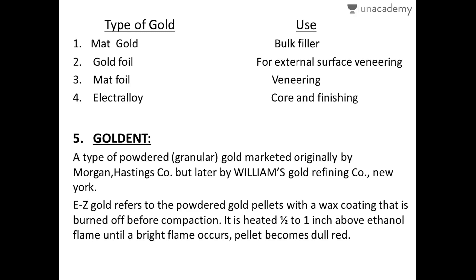Types of gold and their uses: matte gold forms the bulk filler and is used mainly for restoration of the cavity. Gold foil, being a very thin layer, is used for external surface veneering. Matte foil is used for veneering of gold restorations. Electrolyte, the strongest and hardest form containing 0.1% calcium, is used for core build-up and finishing of the restoration.